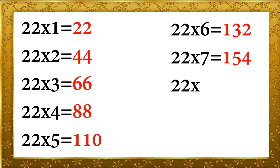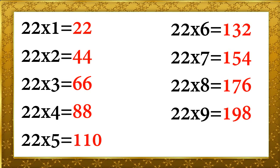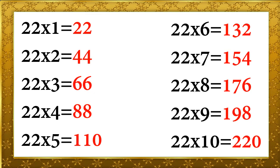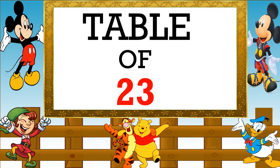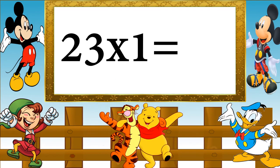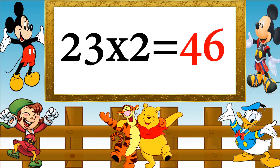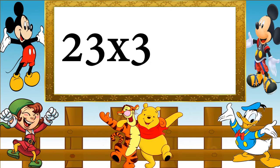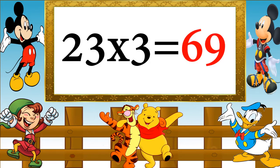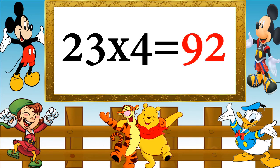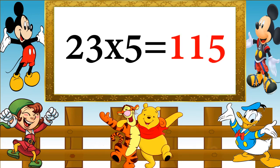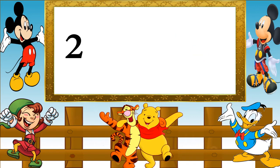Table of 23. 23 ones are 23, 23 twos are 46, 23 threes are 69, 23 fours are 92, 23 fives are 115, 23 sixes are 138.